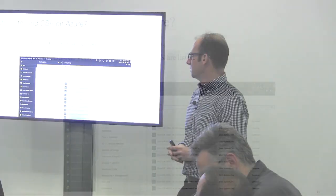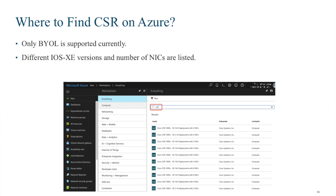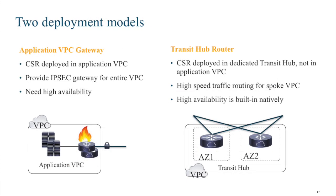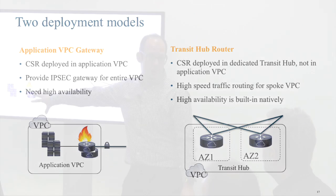There are two main deployment options within AWS, Azure, Google, and others. One is to deploy the CSR on the VPCs or VNets where your applications are — you can have one or two for high availability. The other option is a transit hub router, where your entry point into the cloud has a CSR. The reason for the transit hub is that VPCs can't chain traffic — I'll go deeper into that.